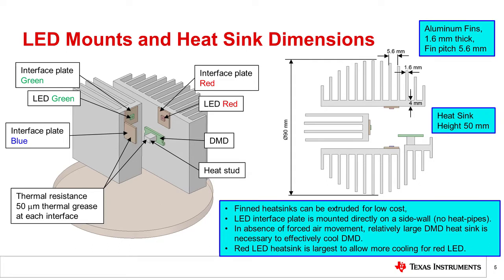The picture on the left side shows how the LEDs are mounted, each on its own interface plate and placed directly against heat sink walls. DMD is thermally connected to the DMD heat sink through aluminum heat stud. Heat sinks have fins that are 1.6 millimeter thick due to requirements set by extrusion process. The pitch of 5.6 millimeters bodes well with natural convection. That's what we generally need in a heat sink that should work with natural convection: a larger pitch.